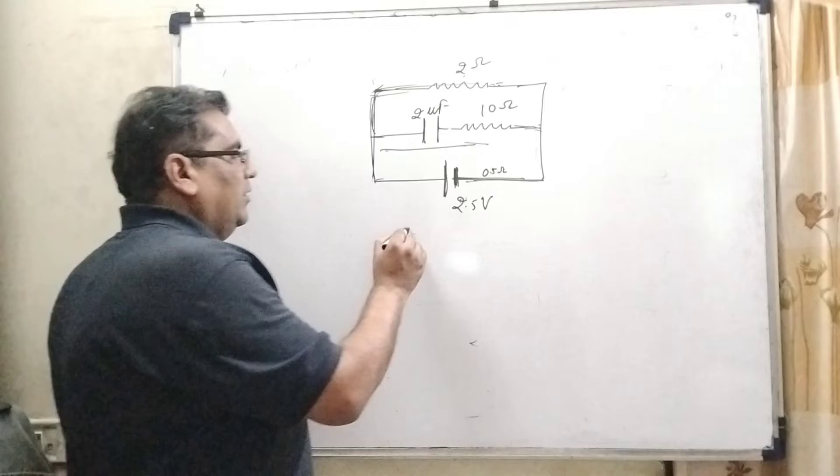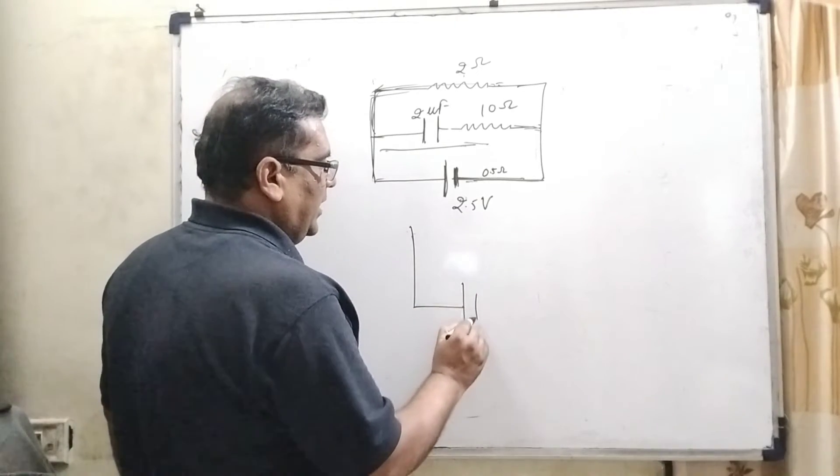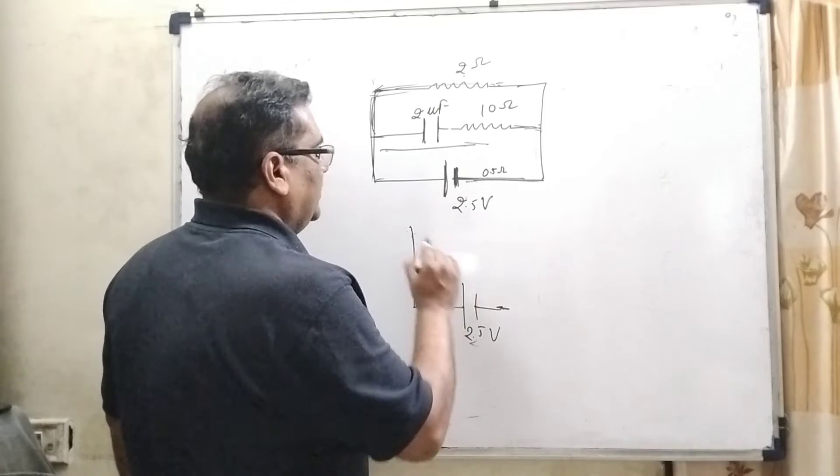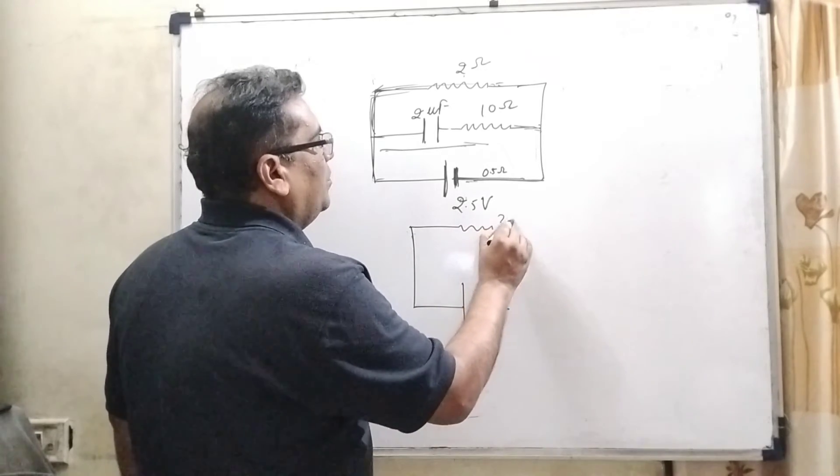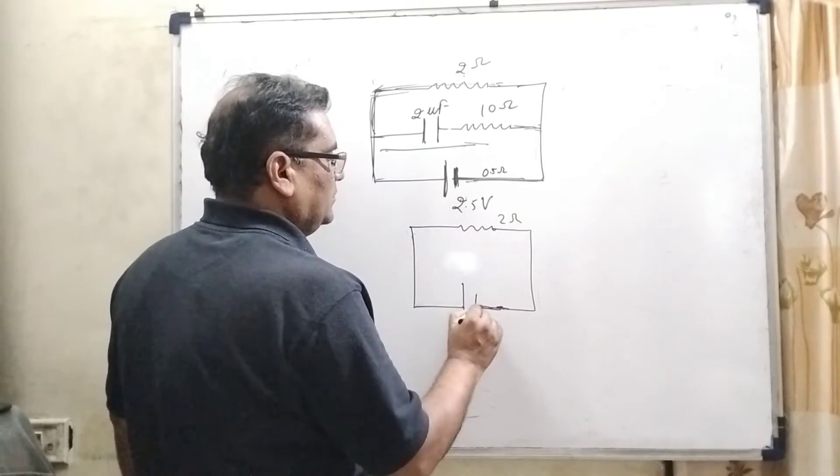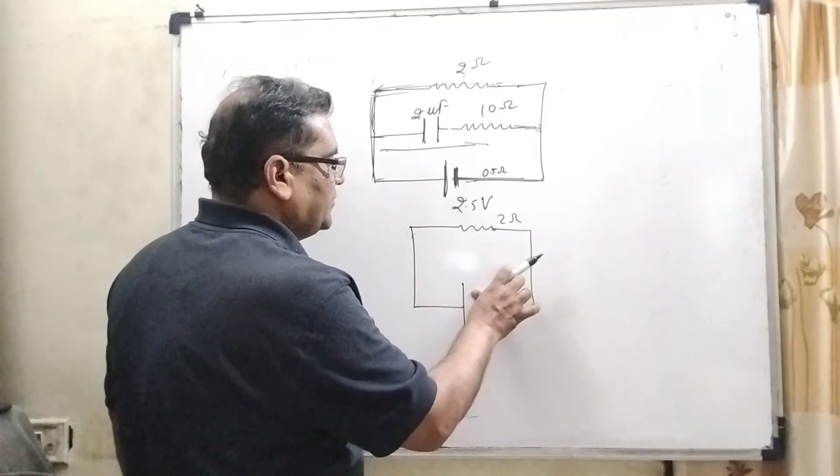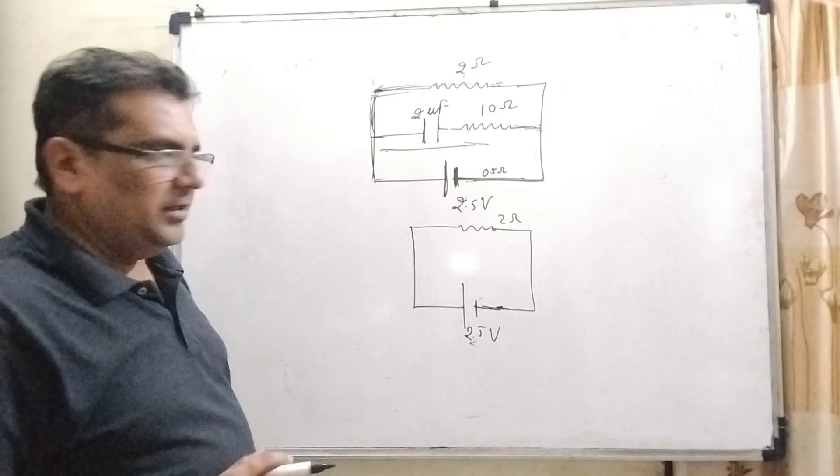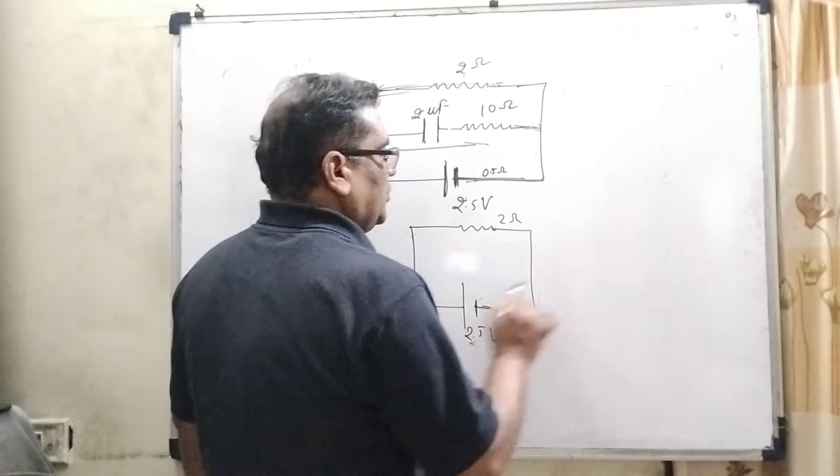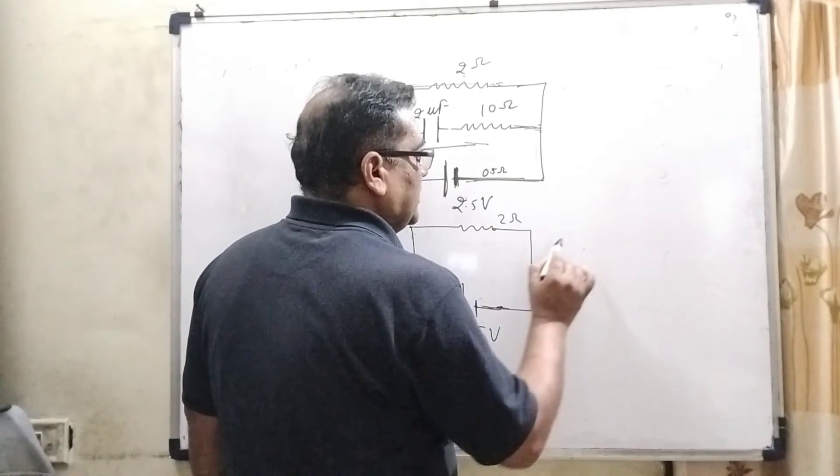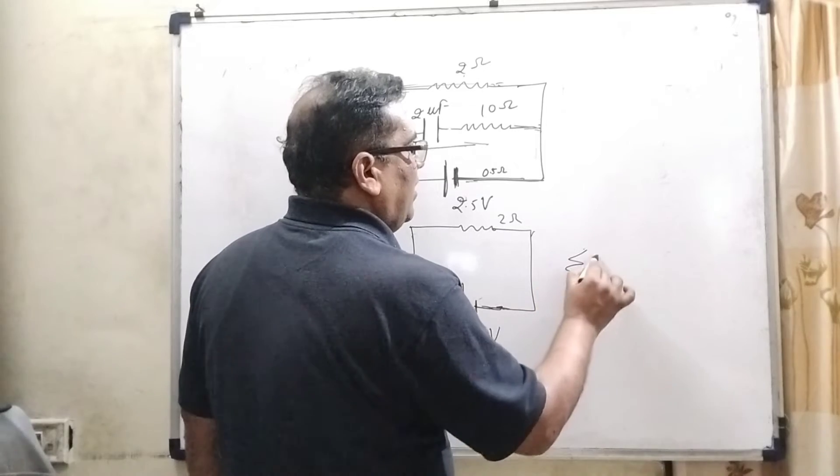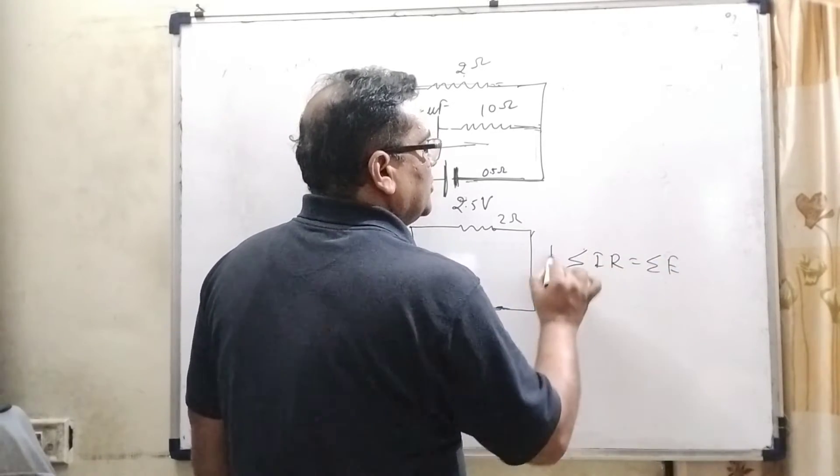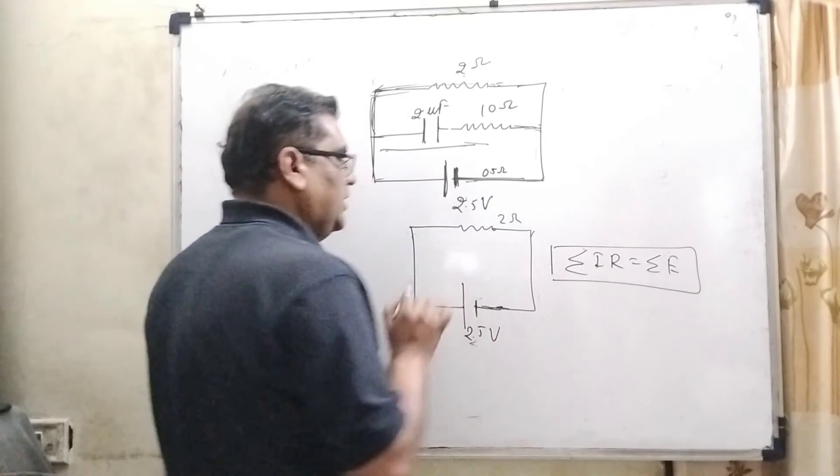Therefore, we have redrawn this diagram again: 2.5 volt and here 2 ohm resistance. By using Kirchhoff's closed loop, we can find out the amount of current in this circuit. What is Kirchhoff's closed loop? Summation of IR is equal to summation of E. This closed loop we have used here.